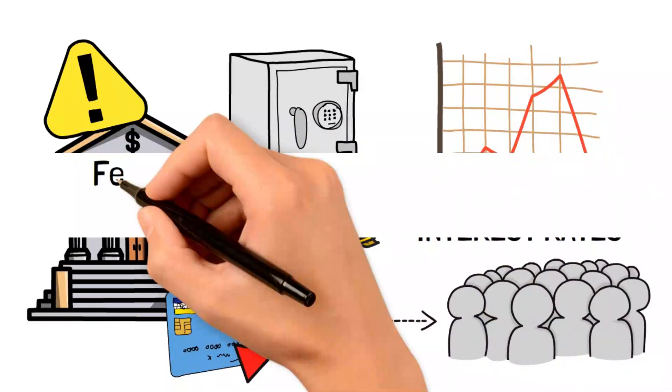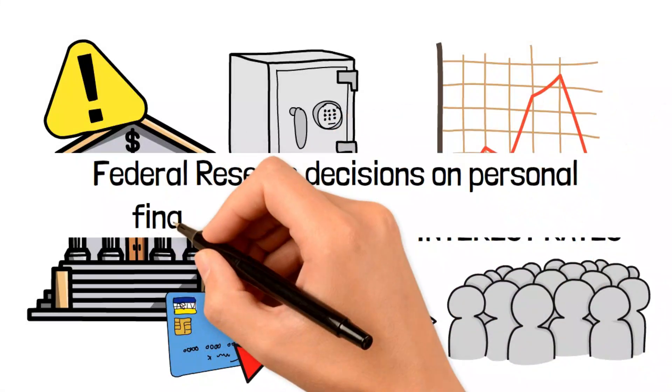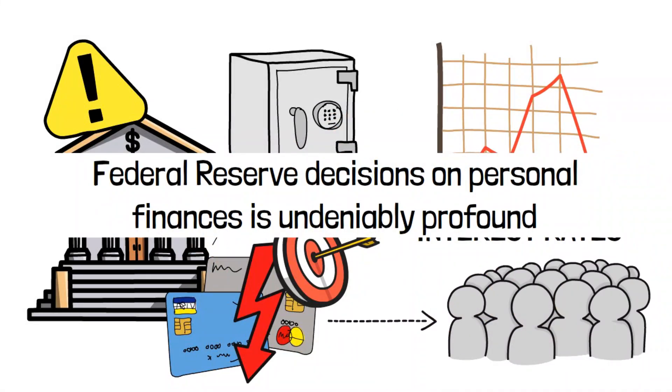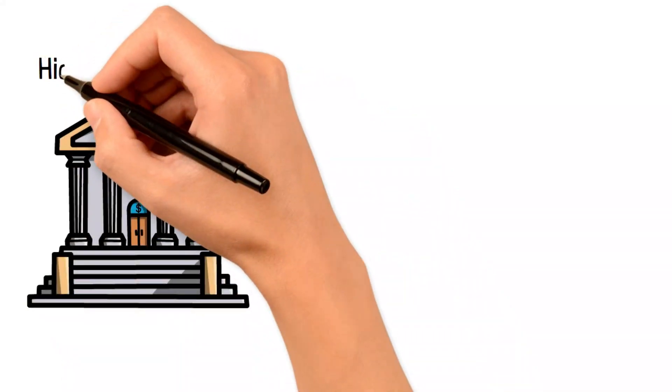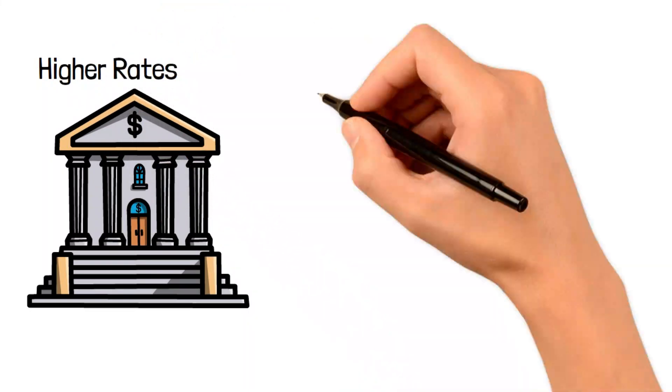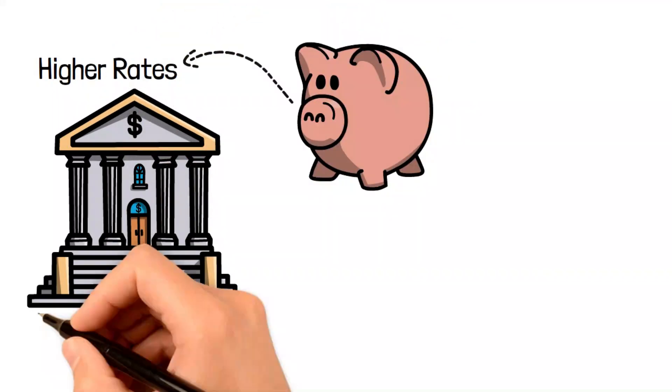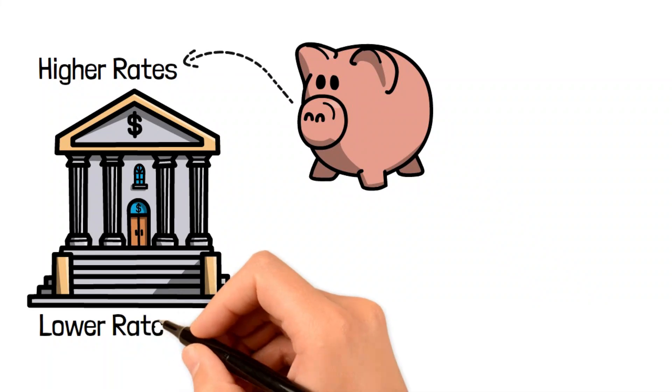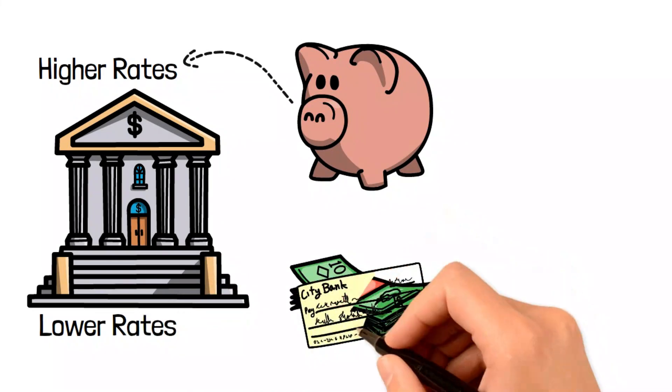The impact of Federal Reserve decisions on personal finances is undeniably profound. Fluctuations in interest rates determine the profitability of savings. Consequently, higher rates lead to increased returns on saved funds, whereas lower rates can significantly change the incentives provided by savings or checking accounts.